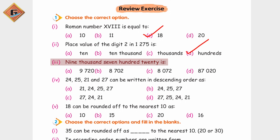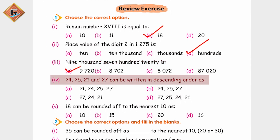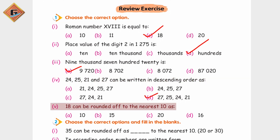9720 is - options hain 24, 25, 21, and 27. Next: 24, 25, 21, and 27 can be written in descending order. Descending order hota hai bade se chote ki taraf jana, to 27, 25, 24, 21 - yeh option D hai. 18 can be rounded off to the nearest 10 - agar humne isko round off karna hai to kya banega? 20.